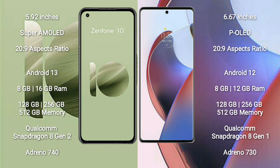Asus Zenfone 10 features the Qualcomm Snapdragon 8 Gen 2 processor and Adreno 740 GPU. Motorola Edge 30 Ultra comes with 8GB and 12GB RAM and 128GB, 256GB, 512GB internal storage.